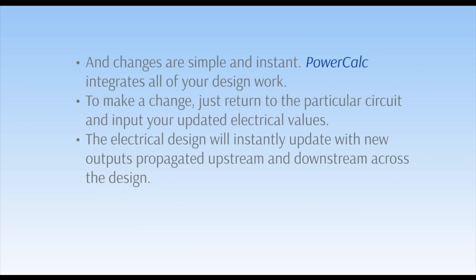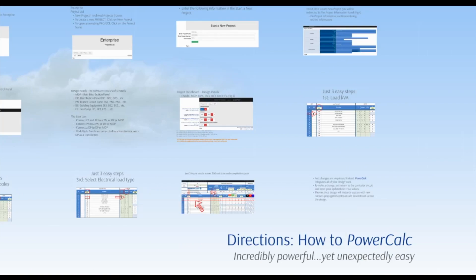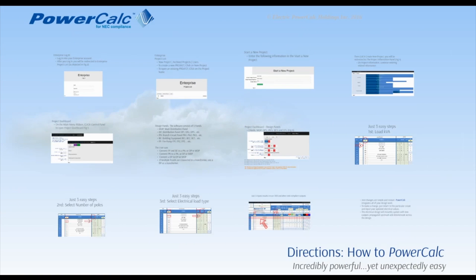Changes are simple and instant. PowerCalc integrates all of your design work — your electrical design will instantly update. New outputs are propagated upstream and downstream across the design. Then PowerCalc goes to work: its 7 million bundled engineering equations automatically calculate your entire power distribution design. You'll save over 40% of design time with no more endless calculations.